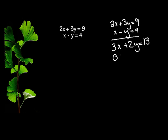I either want 0x or a 0y so that I can solve for the other variable. But you see what happens when I add down right now, I don't get rid of an x or a y. So that means I need to do something to one or both of these equations so that when I do add down, I'll get a 0x or a 0y.